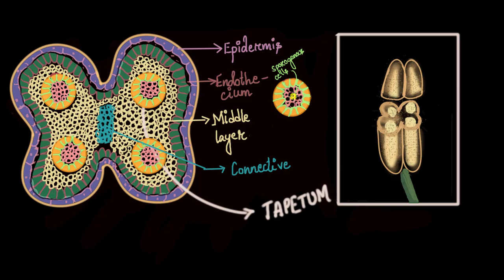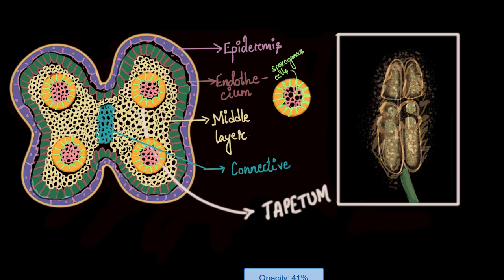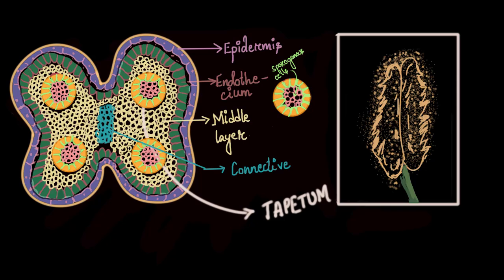We saw how these sporogenous cells divide meiotically to form microspores. Now in this video we will look into the changes that take place inside these microspores so that a pollen is formed, and then how this anther bursts and pollens are released.